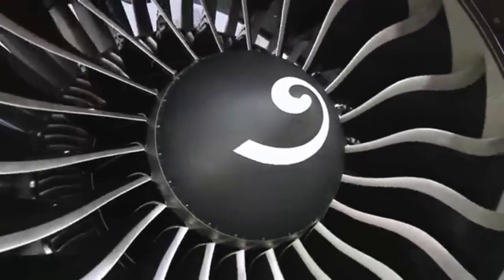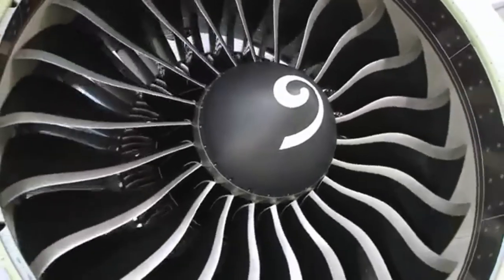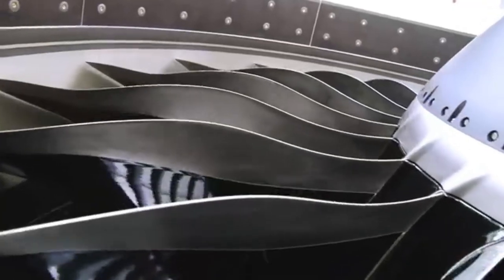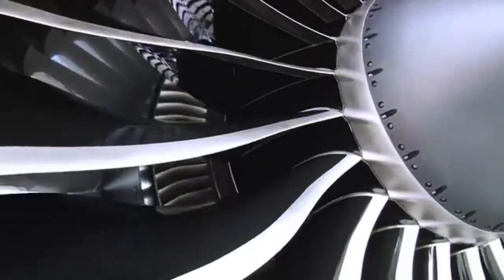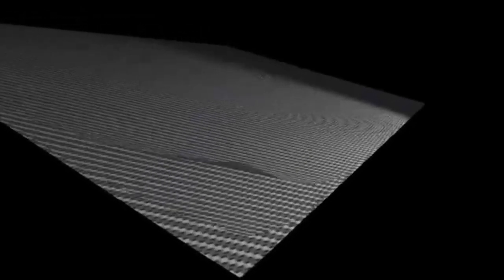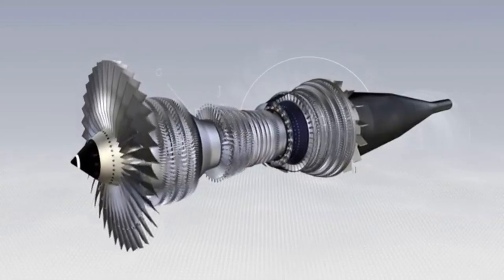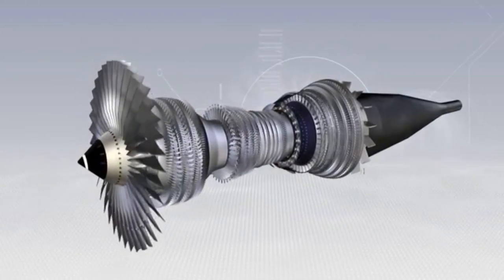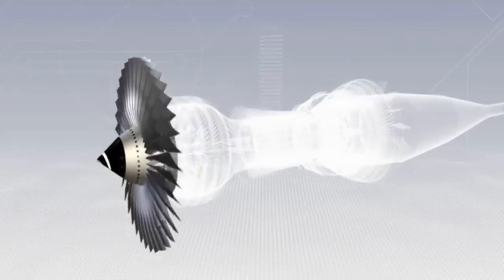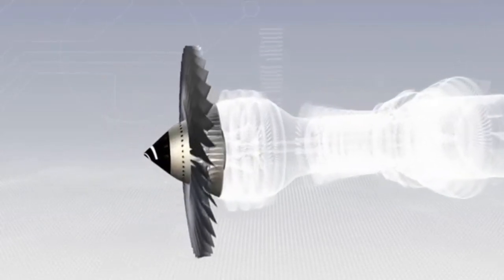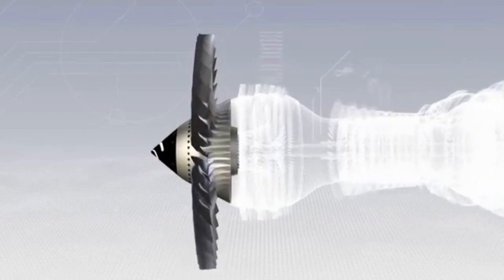First on our list is advanced fan blade technology. Modern high bypass engines feature larger fan blades made from advanced composite materials. These materials are incredibly strong yet lightweight, allowing for larger diameter fans without adding excessive weight. The larger fan diameter increases the bypass ratio, which means more air is pushed around the engine core rather than through it. This improves fuel efficiency and reduces noise.